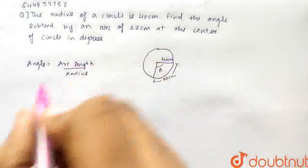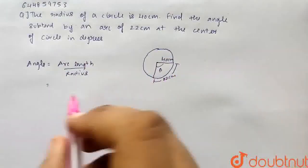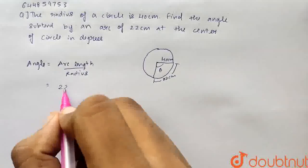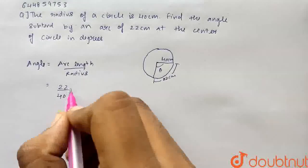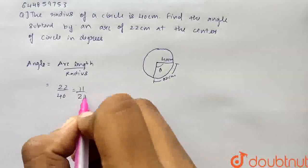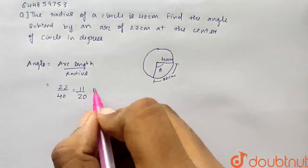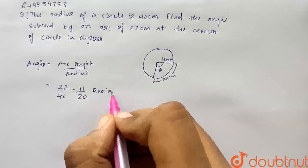So therefore we will get it as arc length is basically 22 cm and the radius is 40. So therefore it is 11 by 20. But we got it in radians. This is 11 by 20 radians.